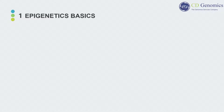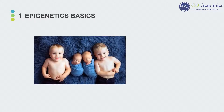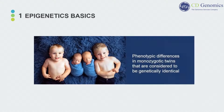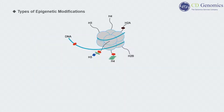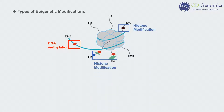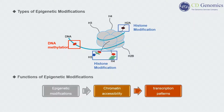Let's begin with a brief introduction of epigenetics. Epigenetics can be used to explain phenomena that cannot be explained by genetics, such as the differences between monozygotic twins that are considered to be genetically identical. Epigenetics is the study of changes in organisms caused by modification of gene expression rather than alteration of the genetic code itself. Epigenetic modifications can be classified into DNA methylation and histone modification, which can influence gene accessibility to DNA binding and regulatory proteins, ultimately altering transcription patterns.